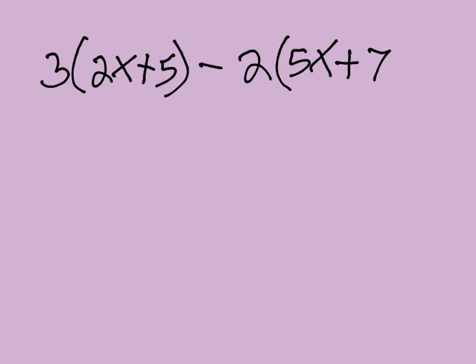So let's take a look. How about if I have 3 times 2x plus 5 minus 2 times 5x plus 7? So what we need to do is distribute.